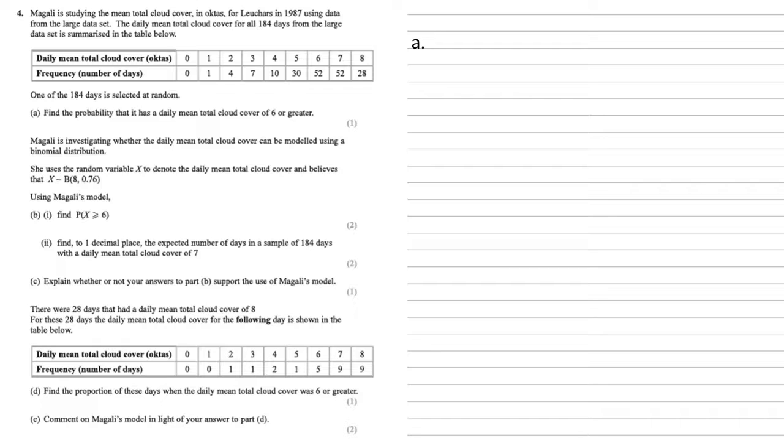So looking at our table, we've got days with 6, 7, or 8, so we need to add them together. So 52 add 52 add 28, all over the total number of days which is 184, to give us an answer of 132 over 184, or if you prefer it as a decimal, 0.7174.